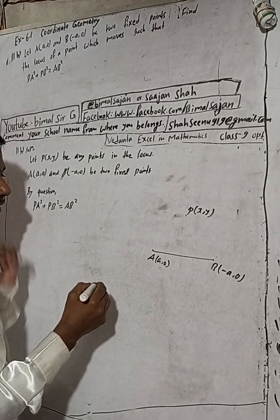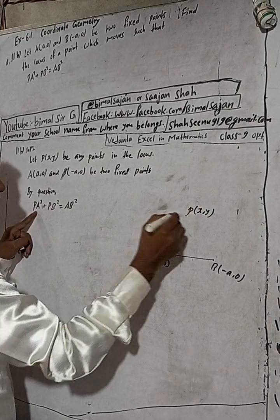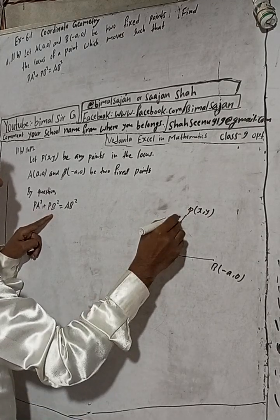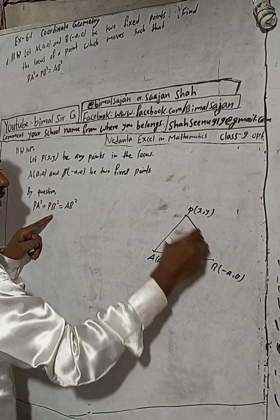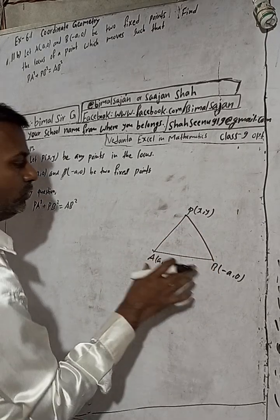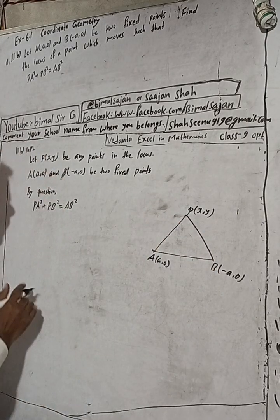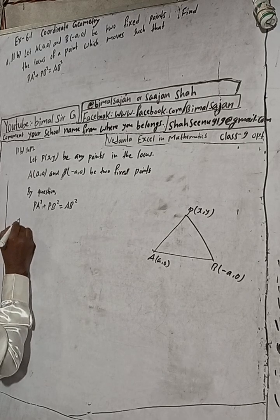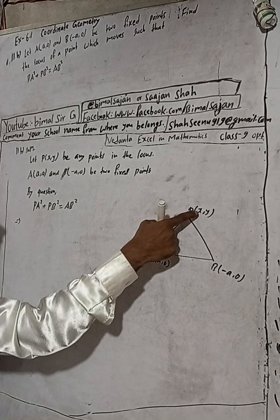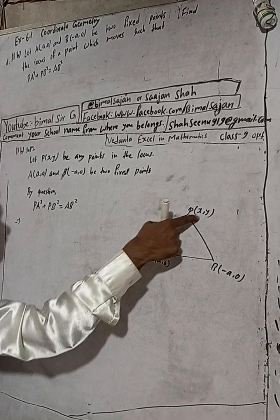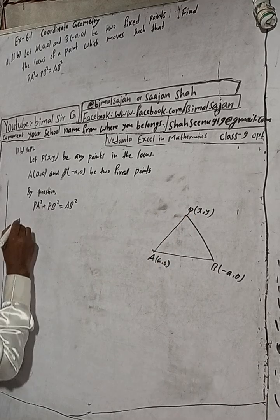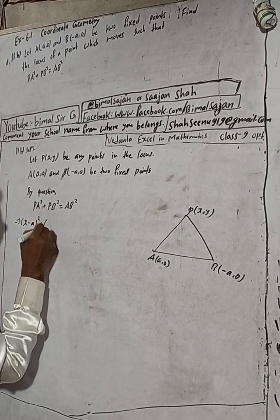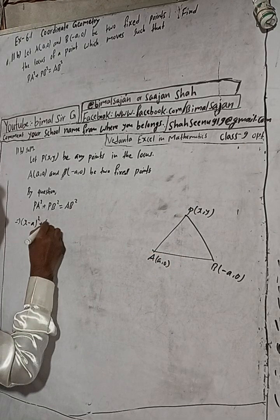By the question, PA² is the squared distance from P to A, and PB² is the squared distance from P to B, and their sum equals AB². Since there is a square, no need to apply the square root. PA² means (x - a)² + (y - 0)².